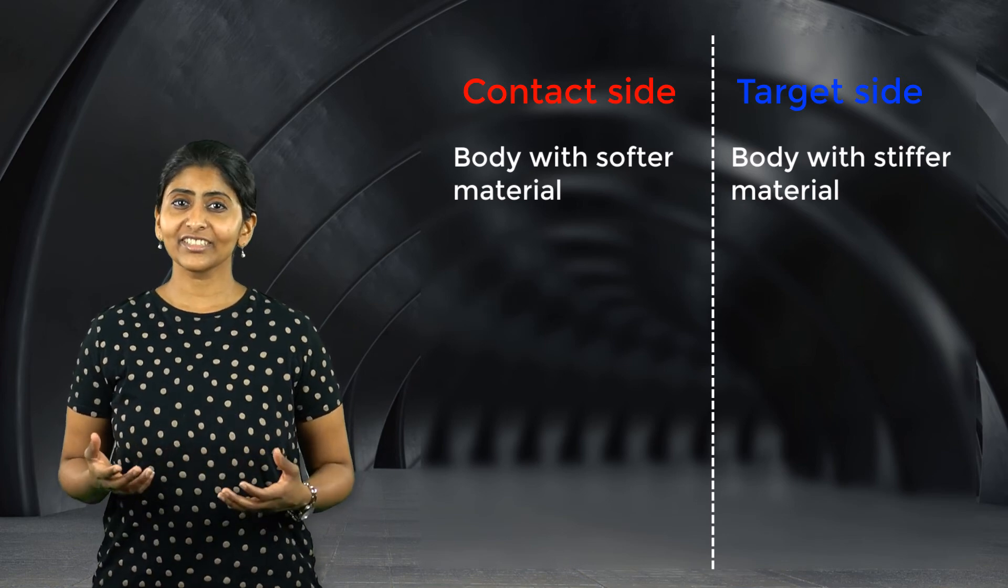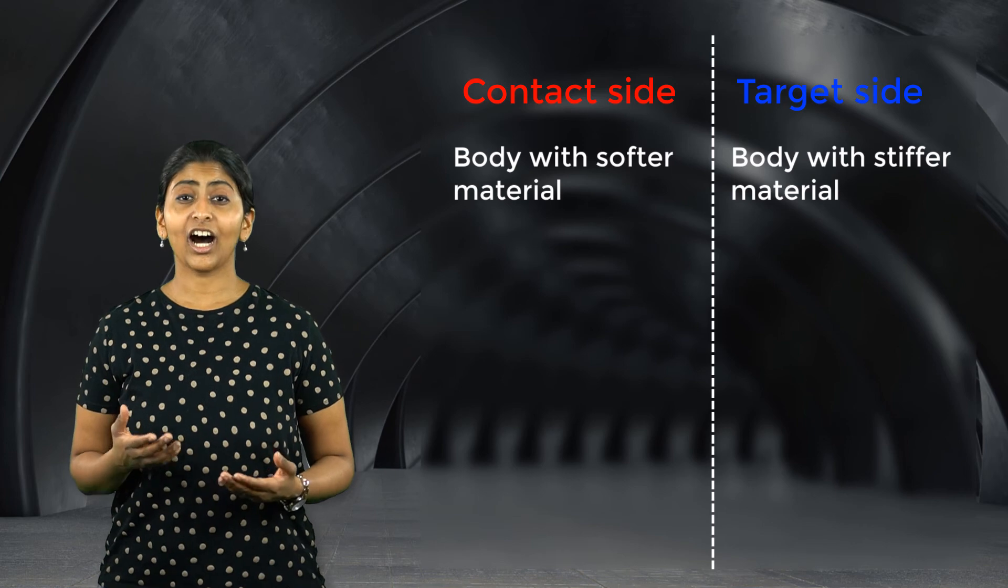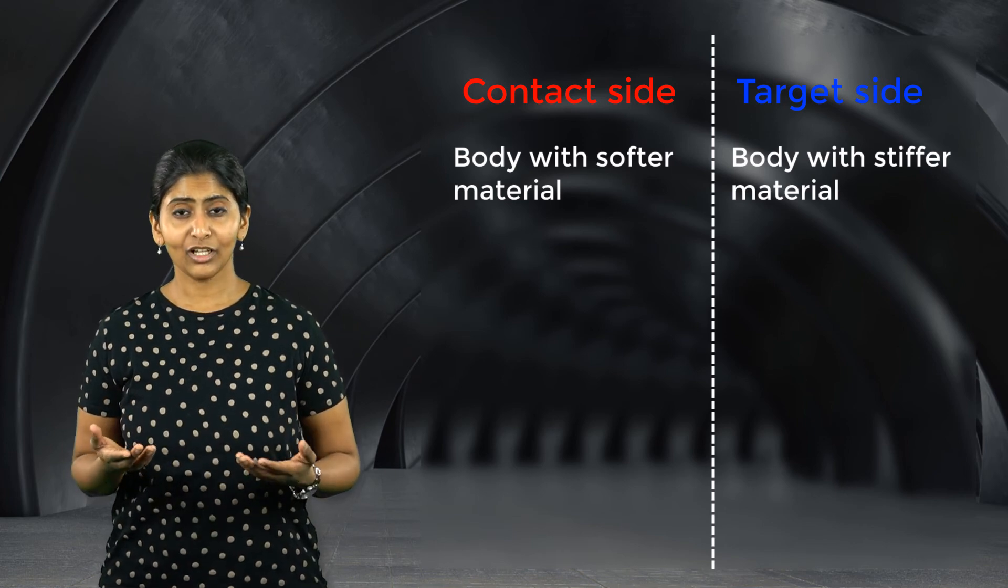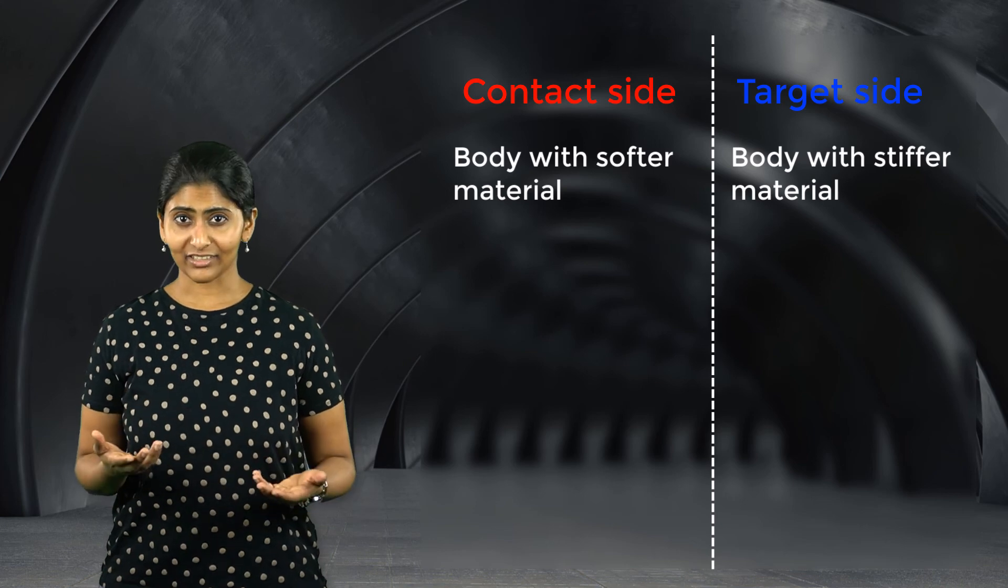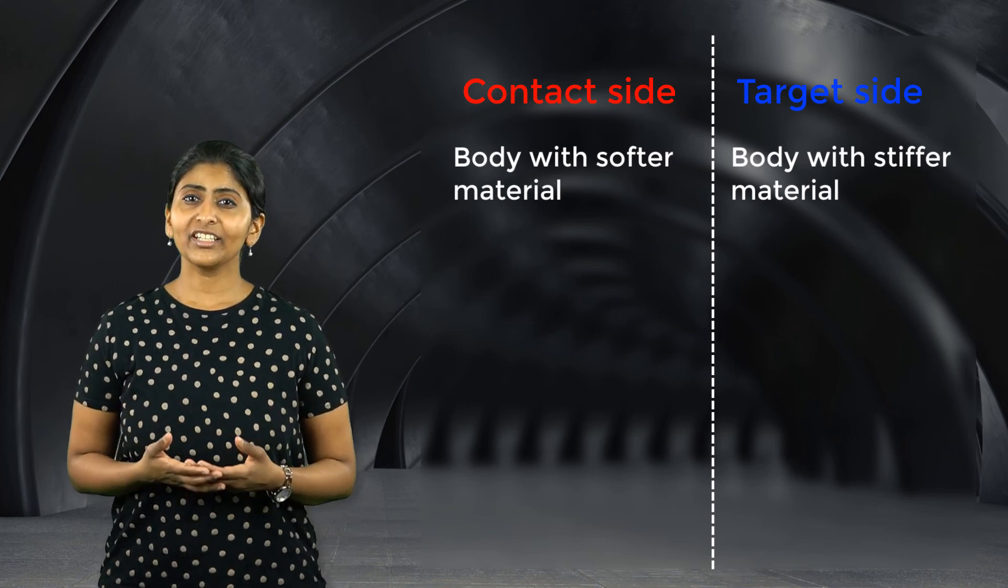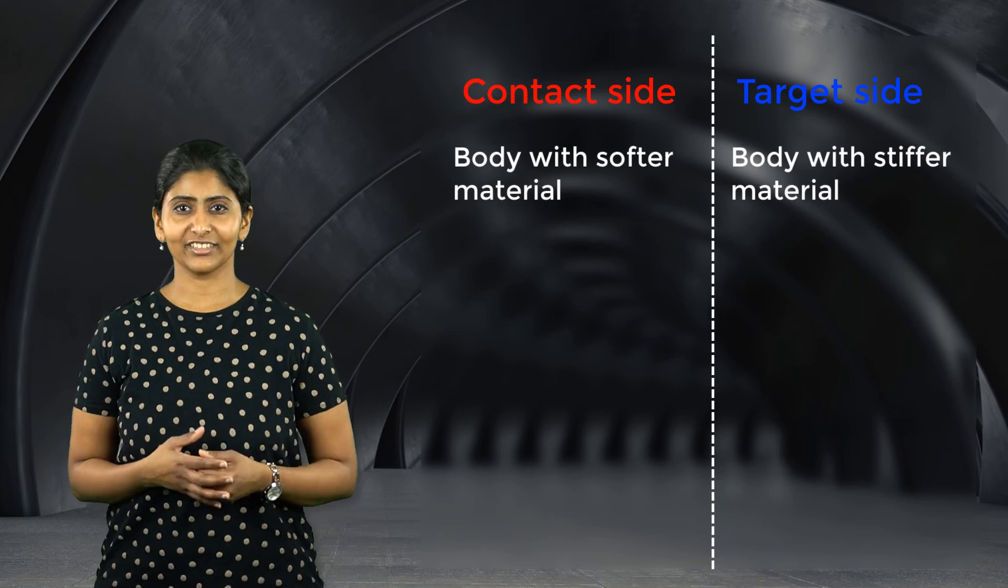If both the surfaces in the contact pair are made of the same material, for example, steel bolts connecting steel flanges, then the geometry of the connecting surfaces is considered.